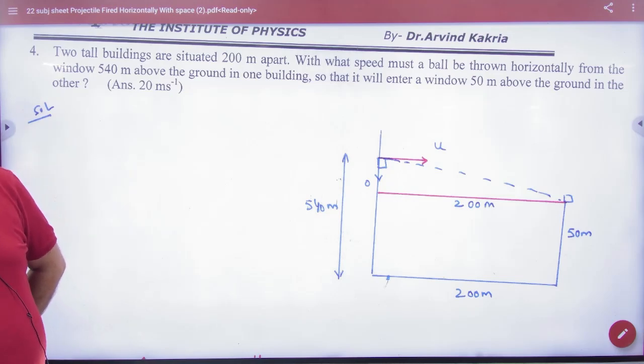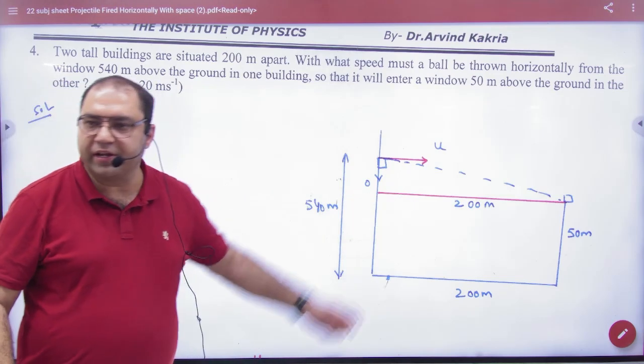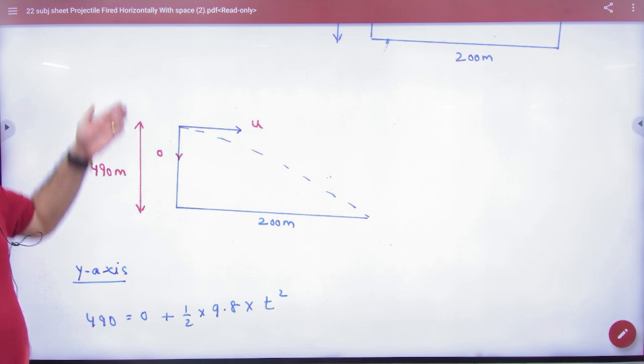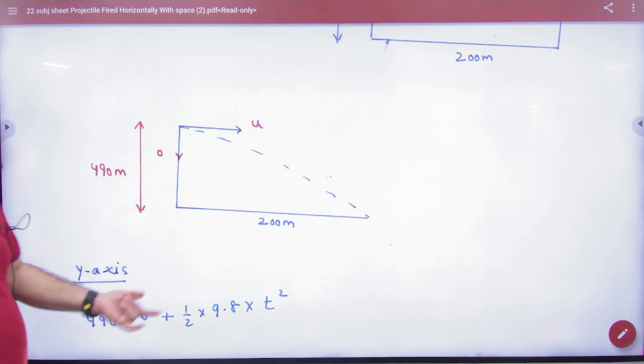How much horizontal distance will it be? 200. So your question is just so much. Height is 490 and horizontal is 200. Initial vertical velocity is 0.